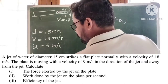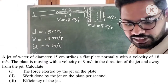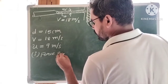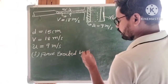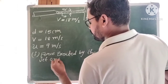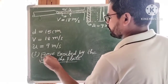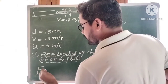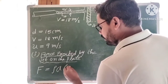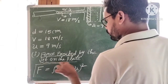We need to find the force exerted by the jet on the moving plate. The formula for this is F equals rho times A times (V minus U) whole squared — that is, F = ρA(V − U)².